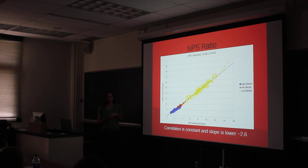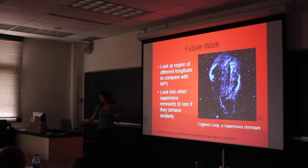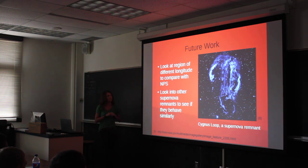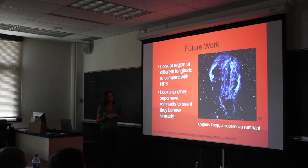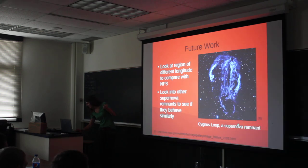That lower PAH abundance could help confirm that the North Polar Spur is a supernova remnant. What we need to do next is look at a region at a different longitude with the same latitudes we used, and then possibly look into other supernova remnants to see if they behave in a similar way, like the Simeis 147 remnant pictured here.